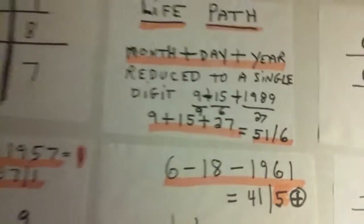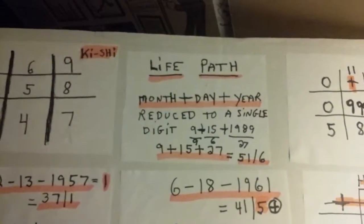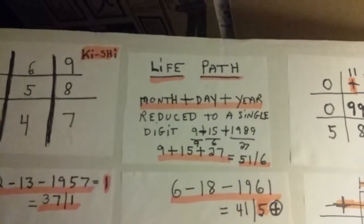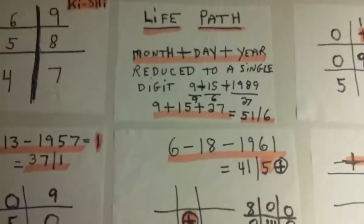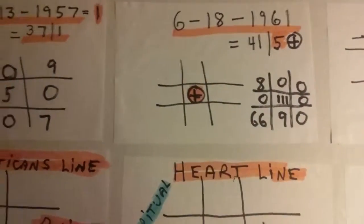Over here, I'm showing how to figure out the life path, where you add the month and the day as well as the year of birth. I'm showing how to compute various birthdays. This is all on my table chart.